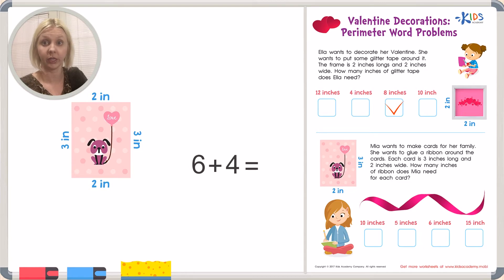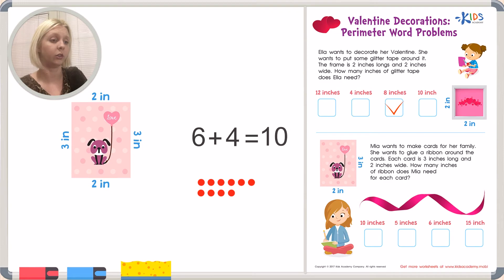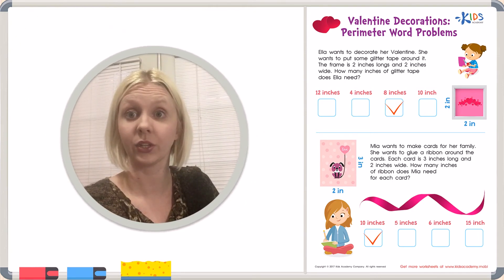6 plus 4. Do you know that one or do we need to write it out with dots? Let's go ahead and do that really quickly just in case. If we're going to add it up, we're going to do 1, 2, 3, 4, 5, 6, and then I'm going to add 4. 1, 2, 3, 4. We're going to add them together. So let's start with 6. We know this is 6. 6, add on, 7, 8, 9, 10. So that gives us our total amount. There's 10 all the way around. So let's find 10 right here. We've got 10 inches. We're going to put a check right there. And that's our answer.